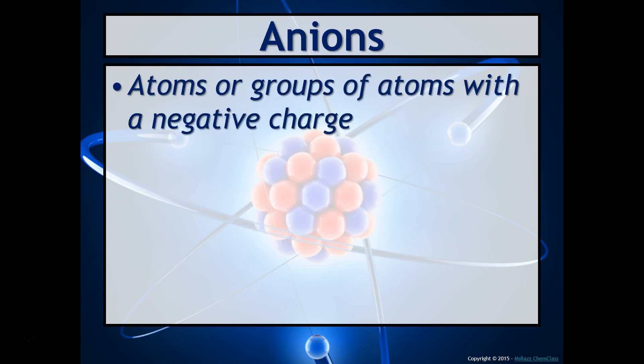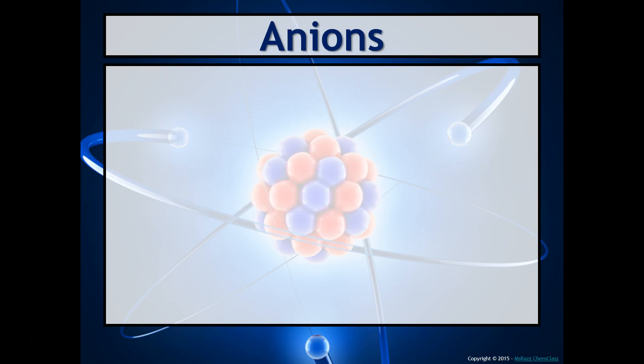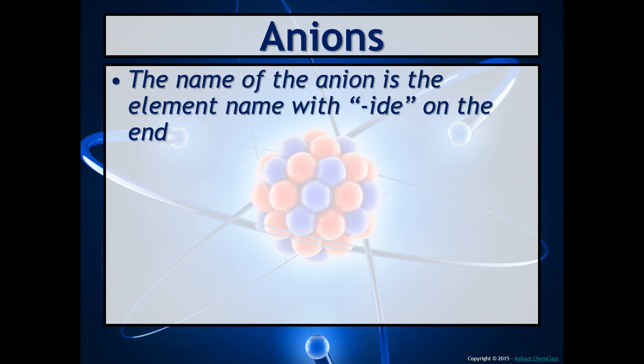Anions, on the other hand, is an atom or group of atoms with a negative charge. Non-metals tend to form ions by gaining electrons. The name of the anion is the element name with IDE on the end.